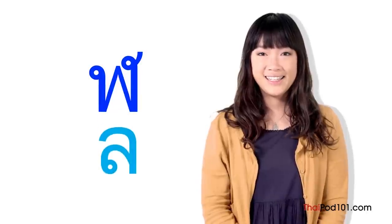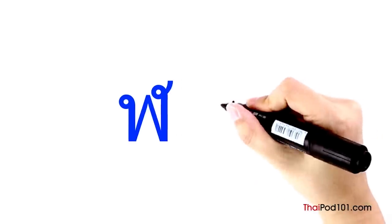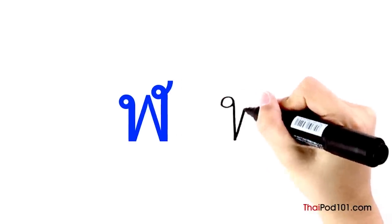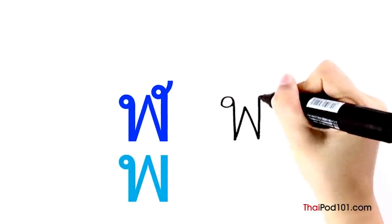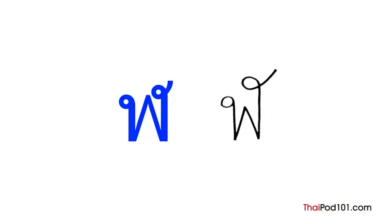LO JULA makes the sound of the letter L, just like LO LING, and it would make the sound of the letter N as a final consonant. Start with the head, make the shape of the letter POR PAN, and add a loop at the end.